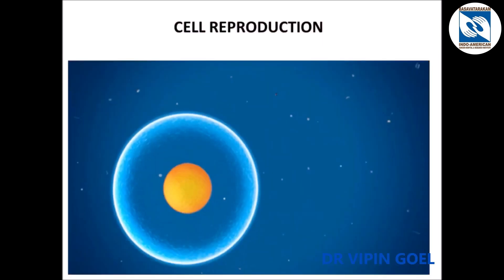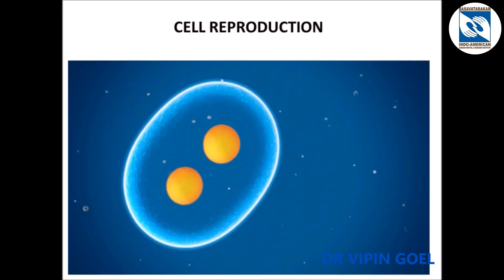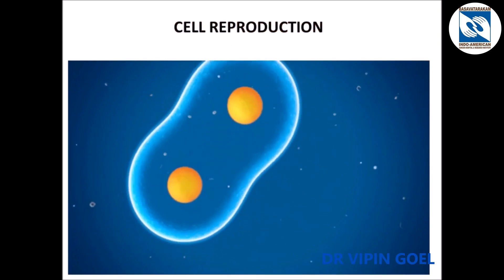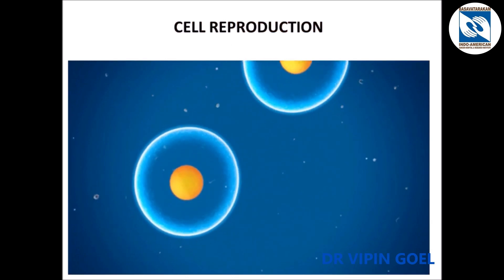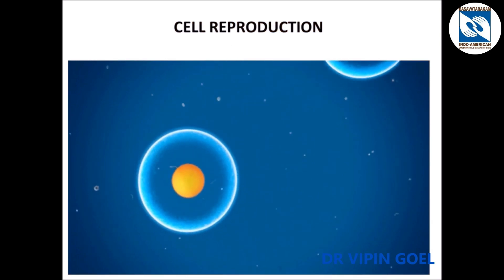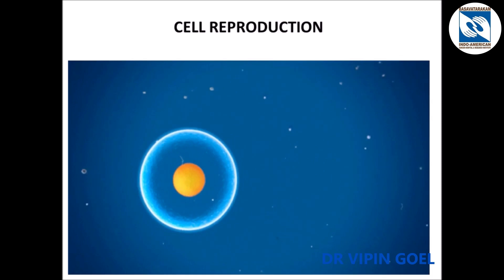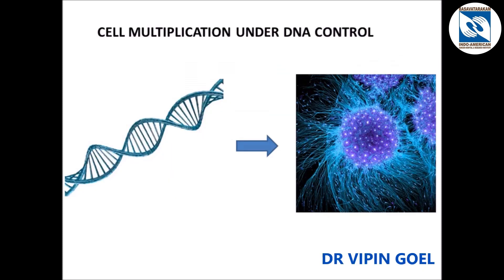In humans, cells of hair, intestine, skin etc. are continuously multiplying in a controlled fashion. This cell multiplication is under the control of DNA, which controls the cell multiplication and sees that they are multiplying in a constant fashion.